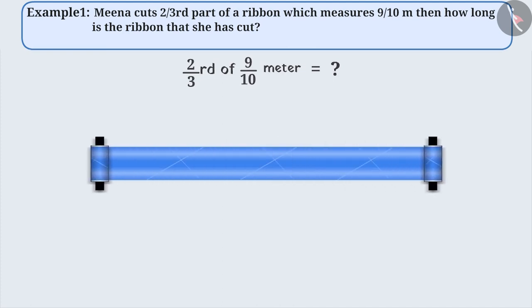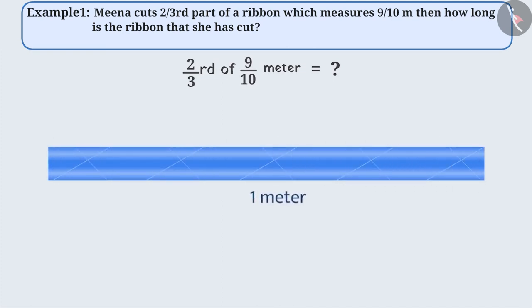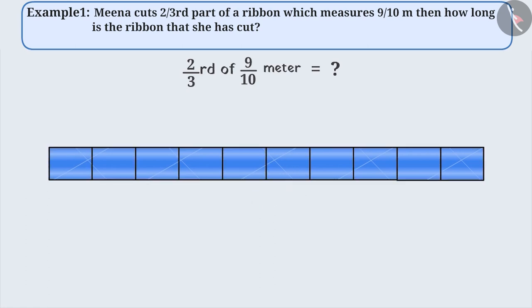Suppose we have a ribbon with length as one meter. If we divide it into ten equal parts, then nine parts out of ten of this ribbon can be expressed as nine by ten meters. We have to find out two-thirds of this, so we will make three equal parts out of these nine parts and take two of the three parts.